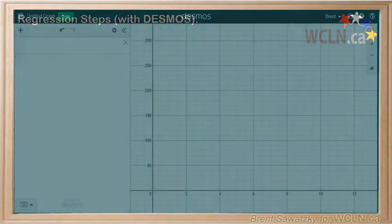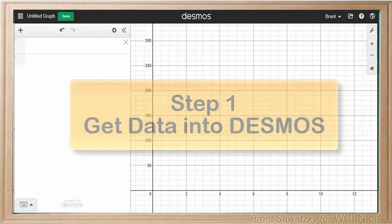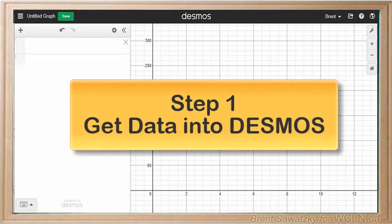We're turning to Desmos at this point with all of our regression knowledge and we're going to use it as an additional tool to analyze data. Let's look at the process of analyzing in the form of steps. Step one: getting all of your data into Desmos.